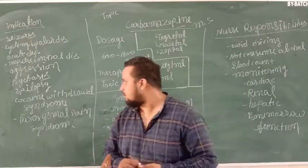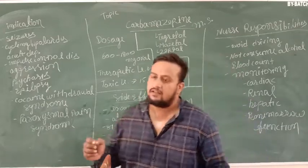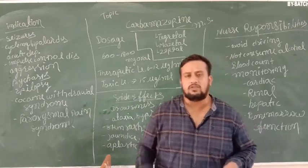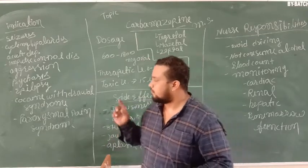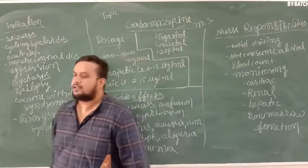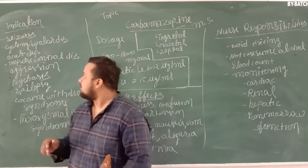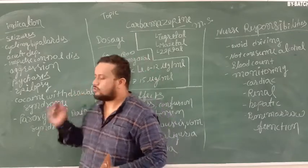In this case, we will see the indication. Indication means that there are many disorders, many psychiatric problems can be treated. This mood stabilizer is a mood stabilizer. So first of all, seizures. Convulsions, seizures can be treated. Then next is Cycling Bipolar Disorders.